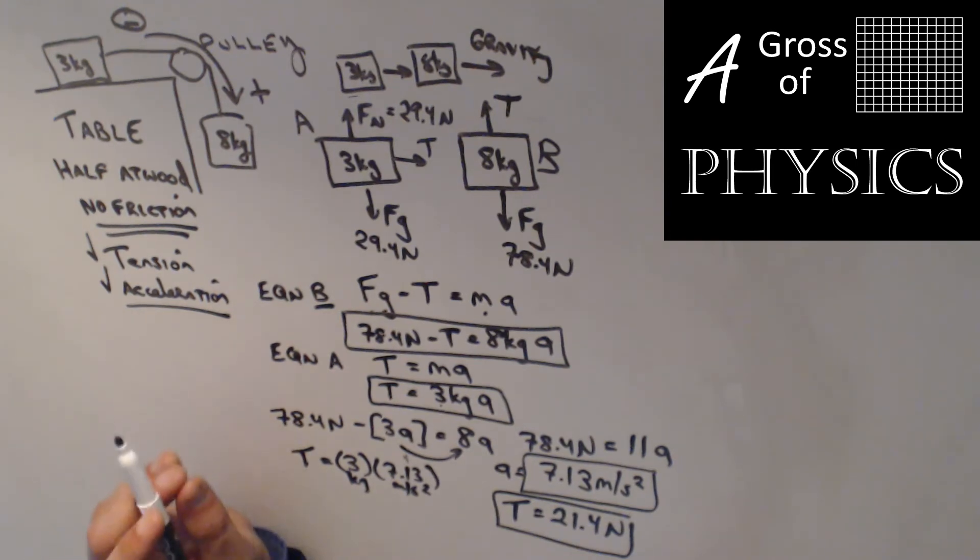There are other ways to solve this, but for me, this is the most direct and will apply to any different situation we're faced with. It doesn't have to just be a half Atwood. It could be any problem with a pulley, maybe with an inclined plane or something like that. For right now, the acceleration is 7.13 for this half Atwood, and the tension is 21.4 N.